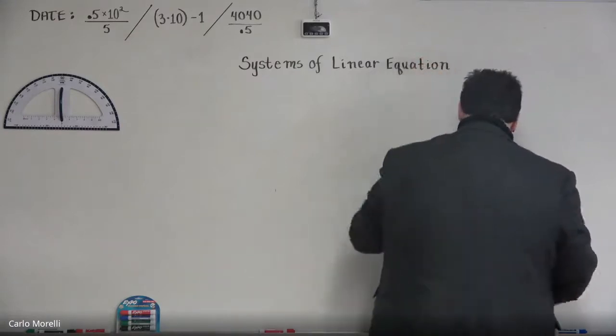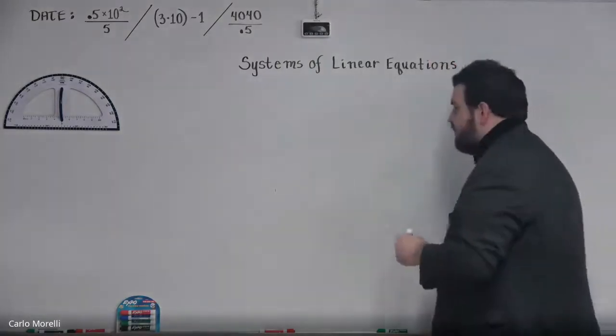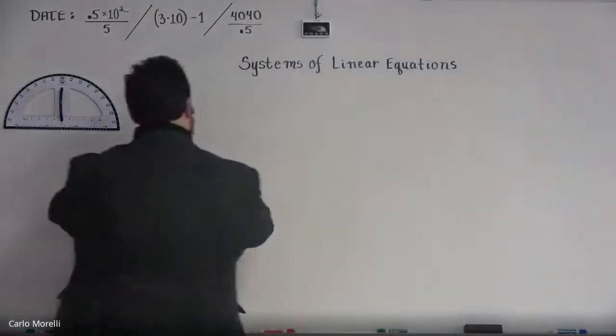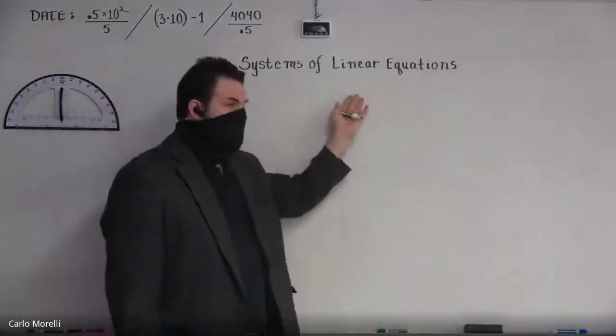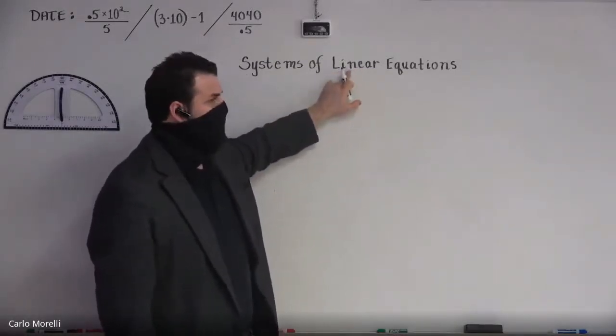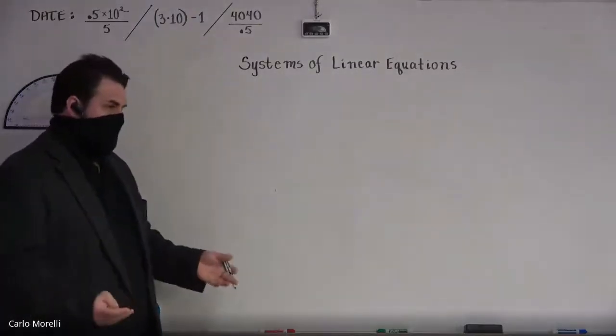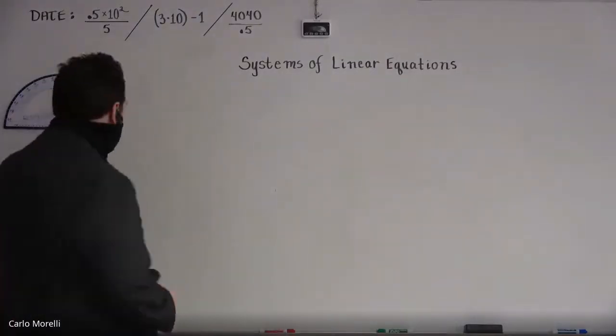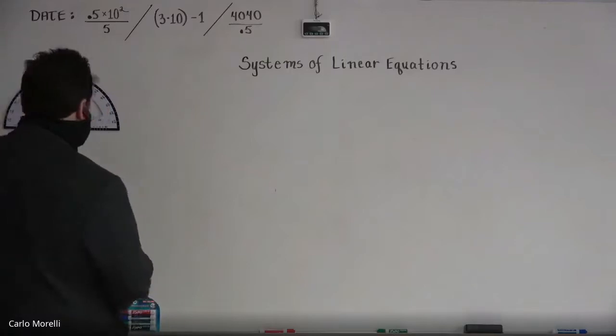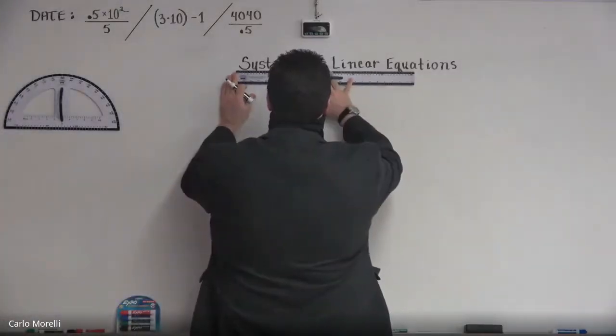But when we say linear equation, we mean straight lines. That's what linear means. You could look at the part of linear that says L-I-N-E for line. Linear equations are straight lines, very simply, let me get this underlined here.